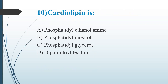Tenth question: Cardiolipin is — Option A: Phosphatidyl ethanolamine. Option B: Phosphatidyl inositol. Option C: Phosphatidyl glycerol. Option D: Dipalmitoyl lecithin. The answer is Option C, phosphatidyl glycerol. Depending upon the structure of the alcohol, phospholipids are classified into five types. Cardiolipin is most important in blood clotting, and phosphatidyl glycerol is the major component of many bacterial membranes.